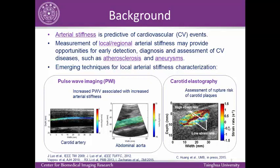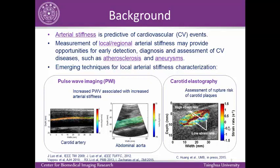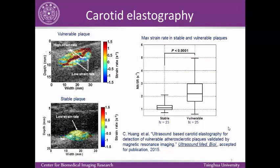Since higher pulse wave velocity is associated with stiffer arteries, pulse wave imaging techniques are proposed for regional and local pulse wave velocity measurement. Shear wave elastography is for mapping the local deformations and is capable of assessing the large strain rates. We previously validated shear wave elastography in detection of vulnerable plaques by magnetic resonance imaging.